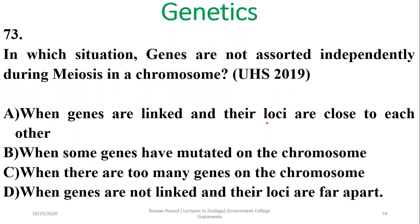Question 72: In which situation are genes not assorted independently during meiosis? When genes are linked and their loci are close to each other, they are not assorted independently.